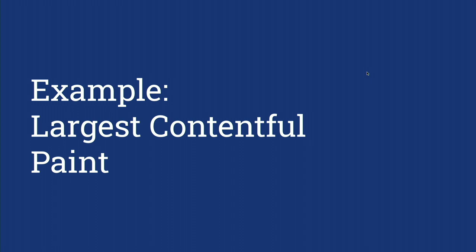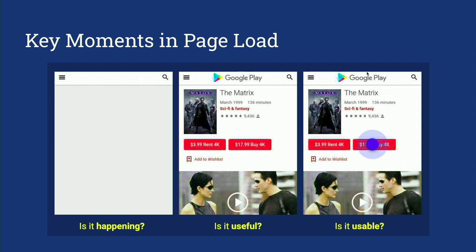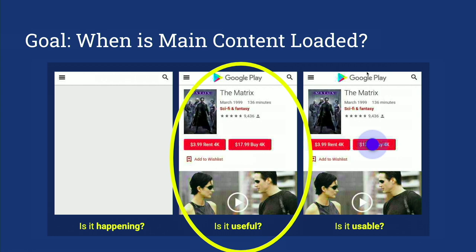That was a lot about metrics. I wanted to give an example — the largest contentful paint metric my team developed recently. First, here are some key moments in the page load user experience we're trying to measure. First, something paints on the screen — you know this page is probably going to load, something is happening. That's currently captured by first contentful paint. Then the main content of the page actually loads — you can tell if this is a useful web page. And finally you can click on things and interact with the page. The goal was to really figure out that 'main content loaded' part — can we get a metric that gives us that?